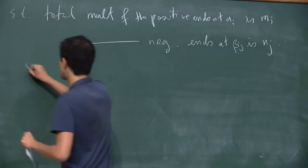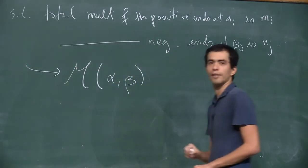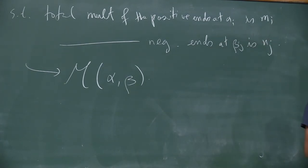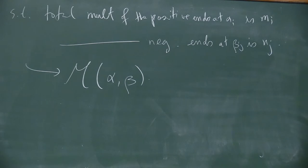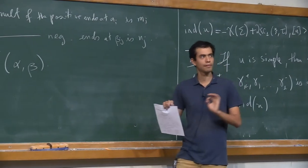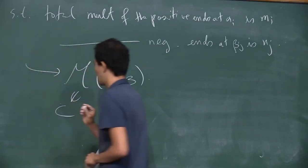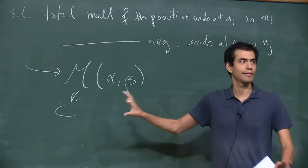The set of such curves is denoted M(α, β) — the moduli space of curves going between α and β. We think about this only as a simple curve with some multiplicity, so we write C for the holomorphic curve as an image rather than a map. This is a technical point.